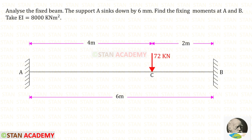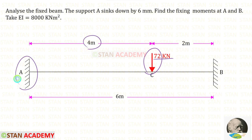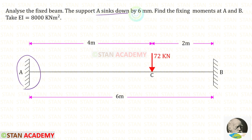Hello everyone. Today we are going to analyze this fixed beam. The span of the beam is given as 6 meters. In this beam there is a point load of 72 kilonewtons. It acts at a distance of 4 meters from the left support. The support A sinks by 6 millimeters. EI is given as 8000 kilonewton meter squared.